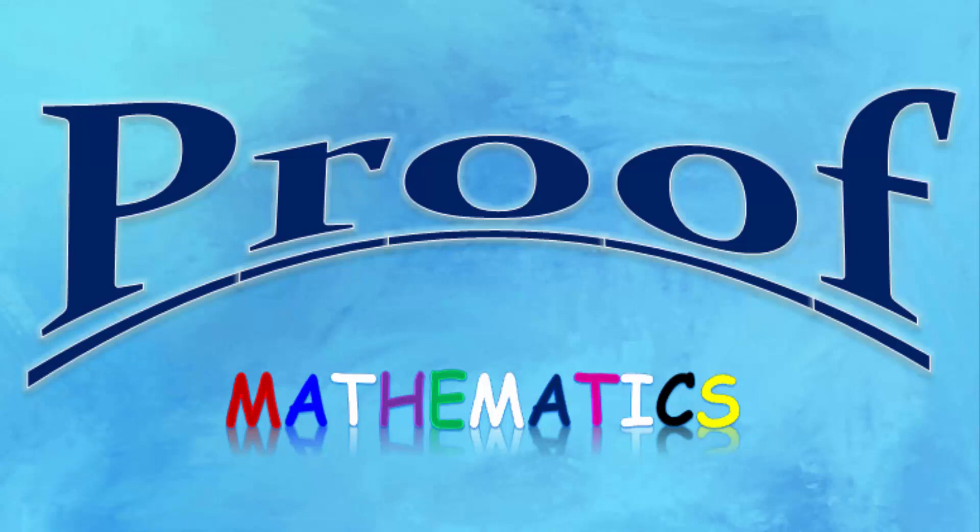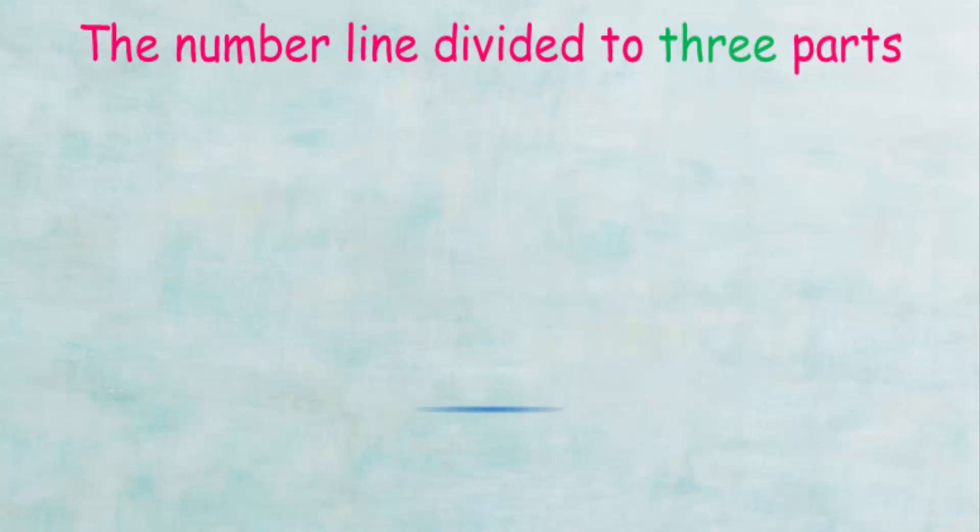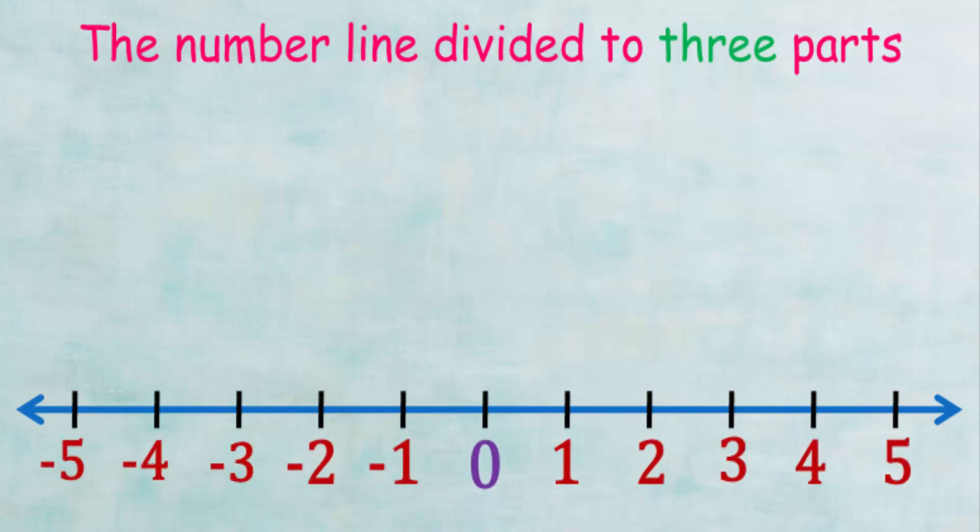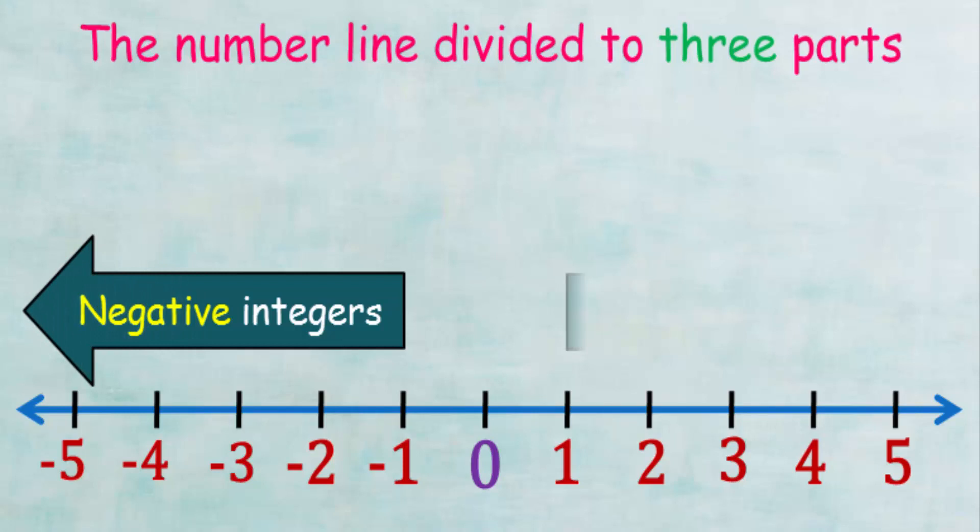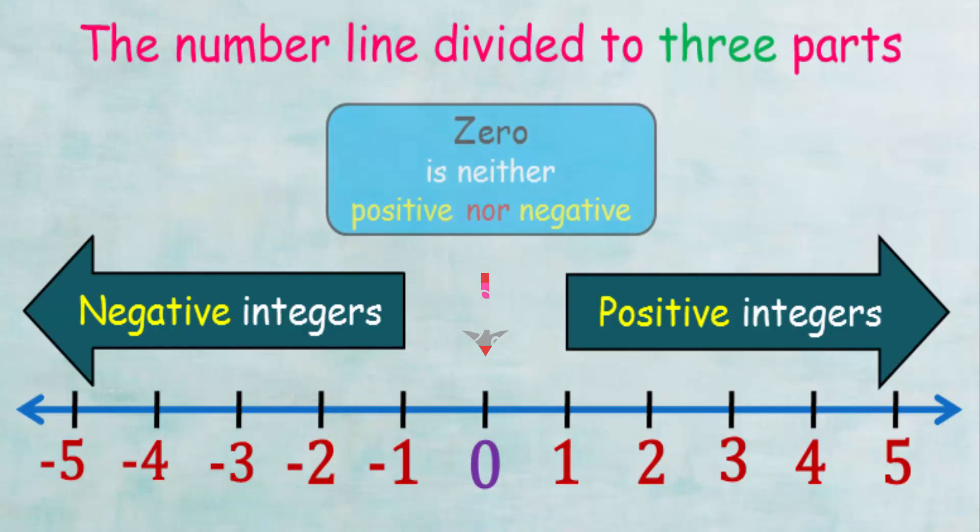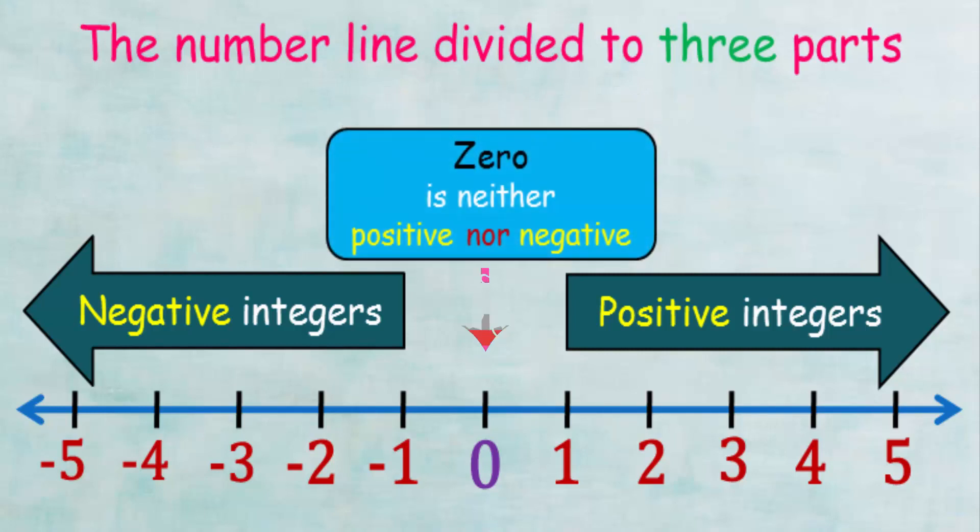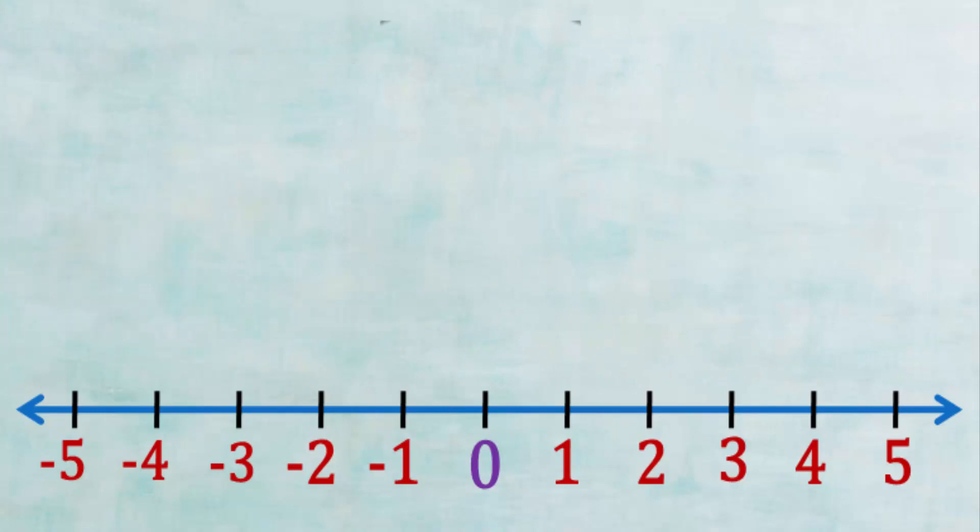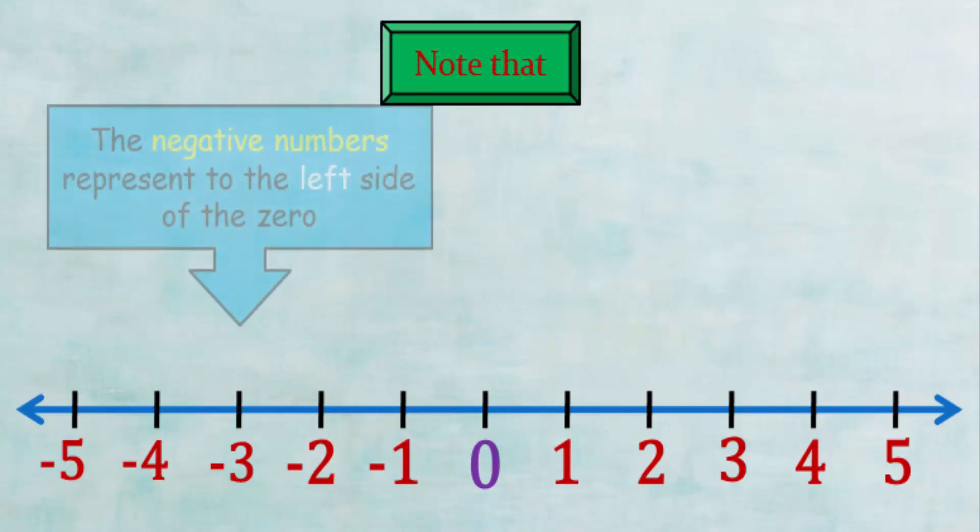At first we should know that the number line is divided into three parts: negative integers, positive integers, and zero. Note that zero is neither positive nor negative. Also note the negative numbers are represented at the left side of the zero and the positive numbers are represented at the right side of the zero.